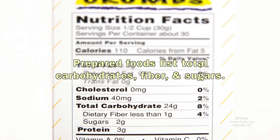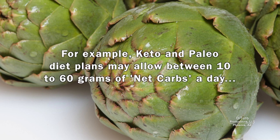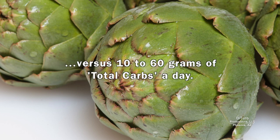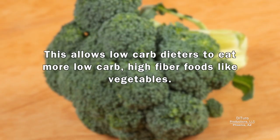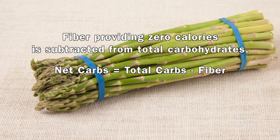Current nutrition facts labels list total carbohydrates, fiber, and sugar. Instead of total carbs, some very low-carb diet plans use net carbs. For example, keto and paleo diet plans may allow between 10 to 60 grams of net carbs a day. Fiber, providing zero calories, is subtracted from total carbohydrates, so net carbs equals total carbs minus fiber.